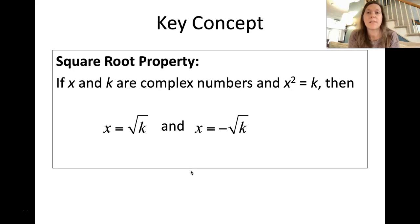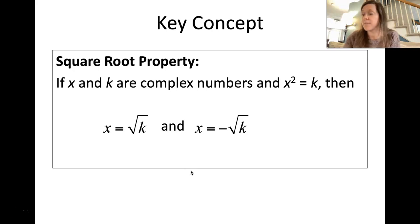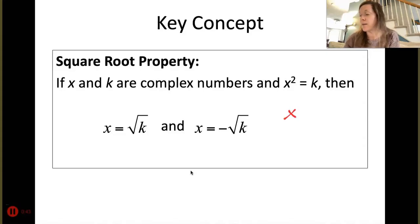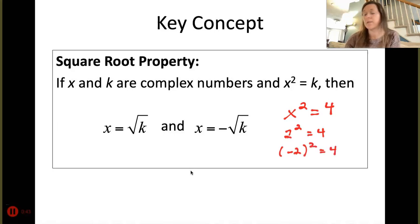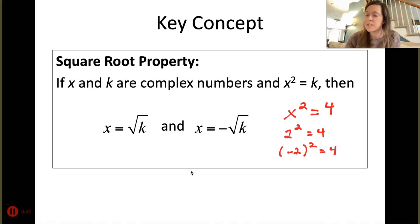The square root property says: if x and k are complex numbers and x squared is equal to k, then x is going to be equal to the square root of k and also equal to the negative of the square root of k. For example, if x squared equals 4, then 2 squared equals 4, but so does negative 2 squared. So it's both the positive and negative values that result in your solutions.